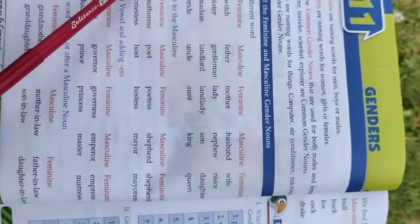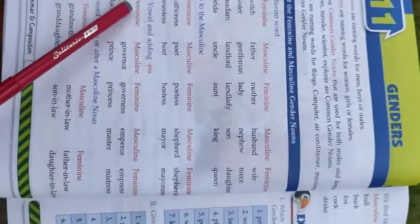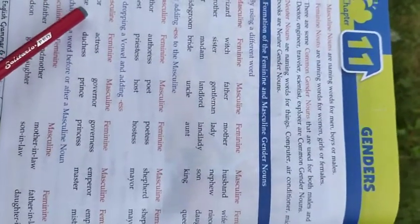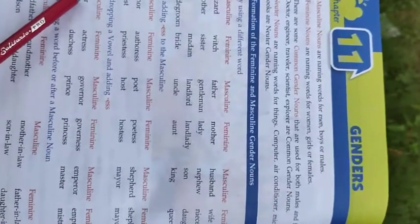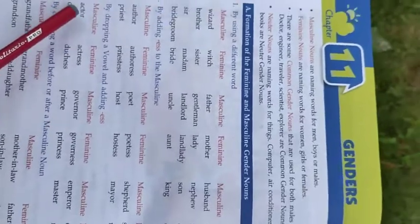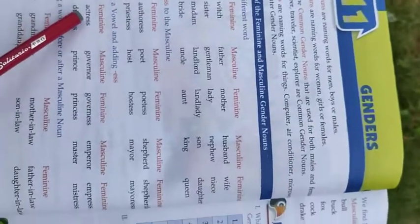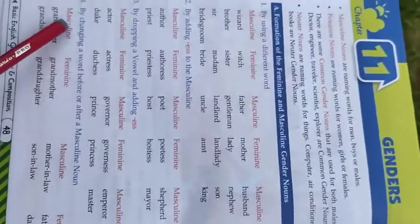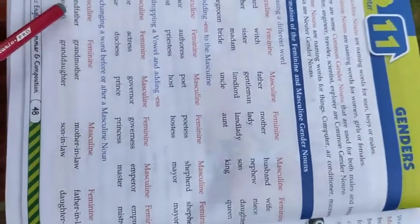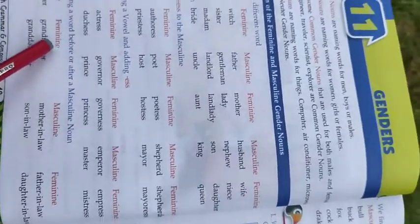The third method is by dropping a vowel and adding '-ess.' For example, 'actor' — the 'o' is a vowel, so it is deleted and '-ess' is added. The fourth method is by changing a word before or after the masculine form to create the feminine gender.